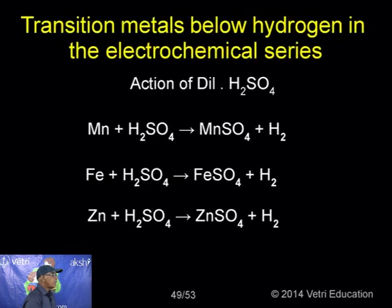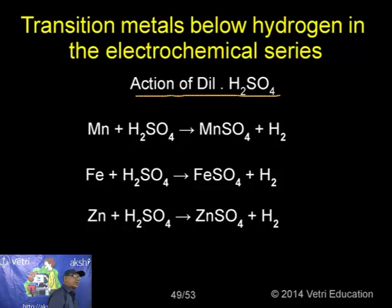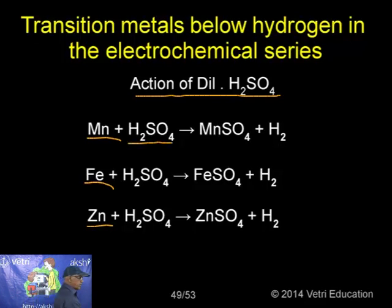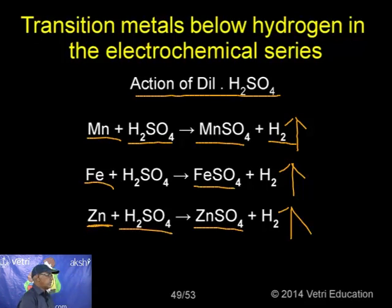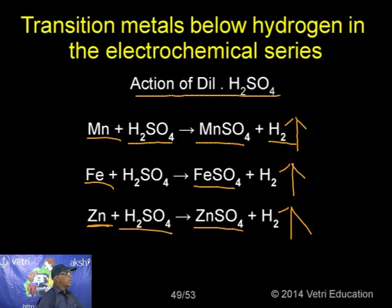Other metals like manganese, iron, and zinc also react similarly with dilute sulphuric acid to produce hydrogen: Mn + H₂SO₄ → MnSO₄ + H₂; Fe + H₂SO₄ → FeSO₄ + H₂; Zn + H₂SO₄ → ZnSO₄ + H₂. So dilute sulphuric acid always produces hydrogen gas — this is the most important point.